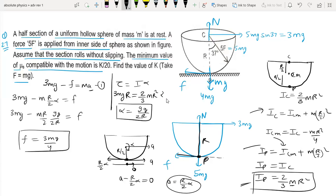Friction is equal to μs into N. Friction is 3MG by 4, N is 5MG. So μs is greater than equal to 3 by 20.